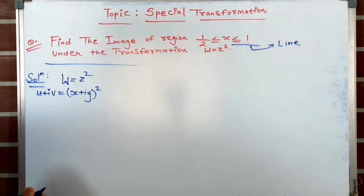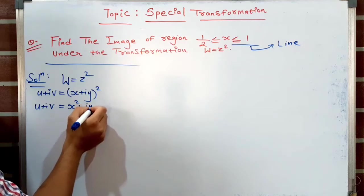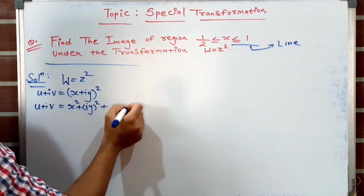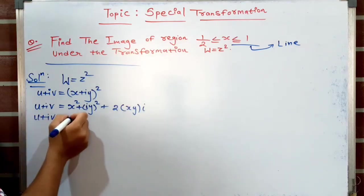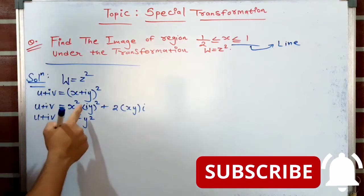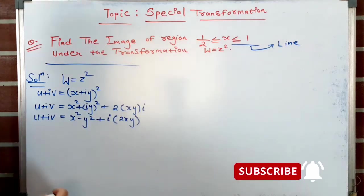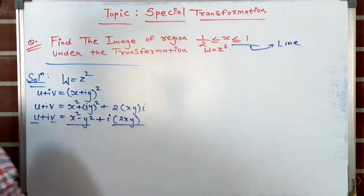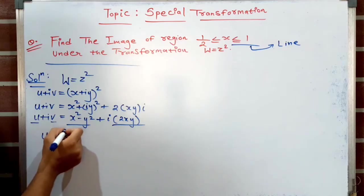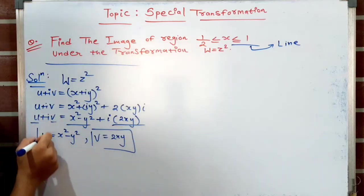Expanding the bracket: u + iv = x² + (iy)² + 2xyi = x² − y² + i·2xy, since i² = −1. Separating real and imaginary parts: u = x² − y² and v = 2xy.